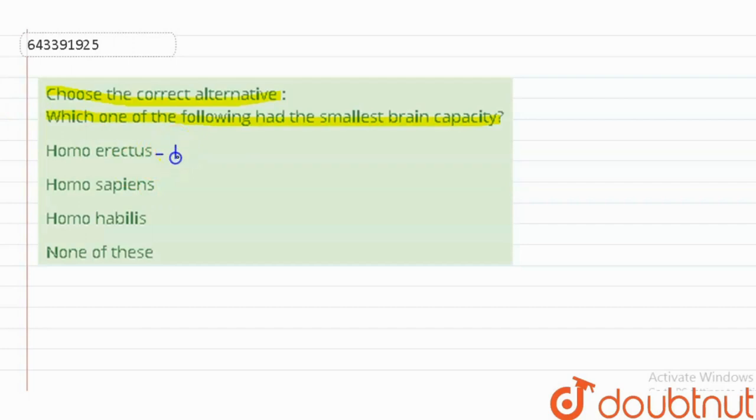Homo erectus arose around 1.7 million years ago and they had the brain capacity of 800 to 1300 cc. Now Homo